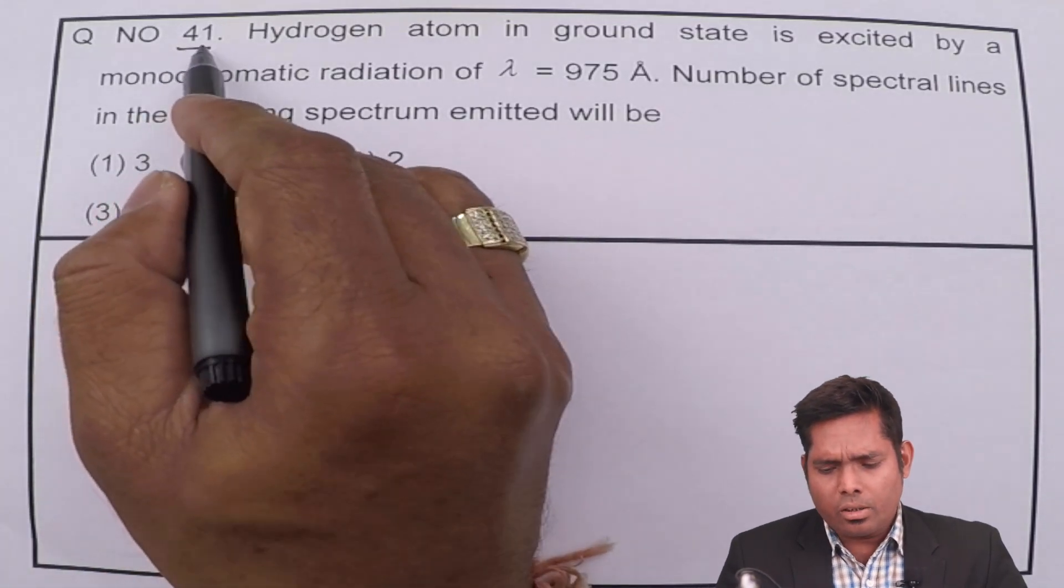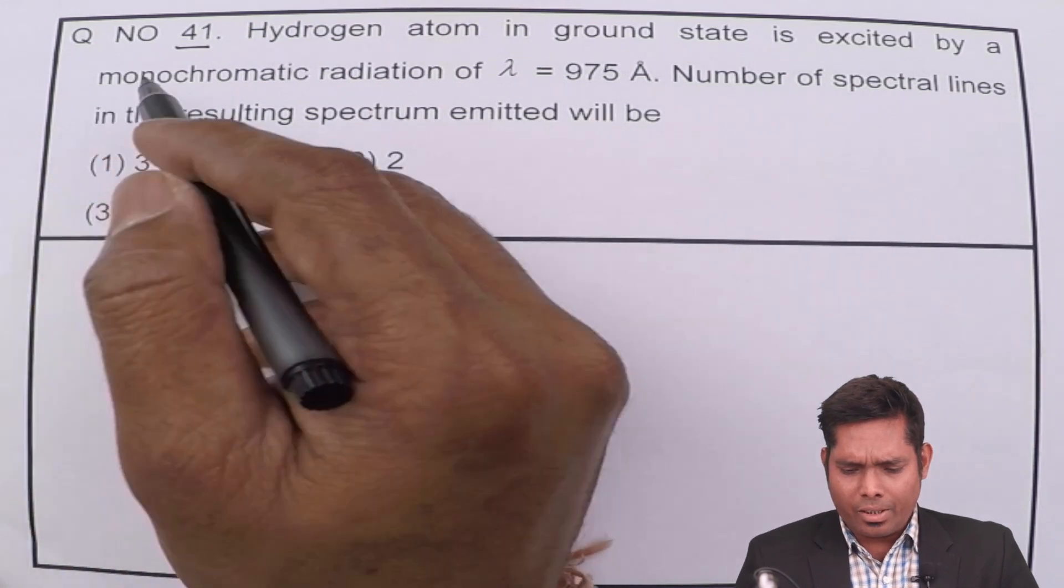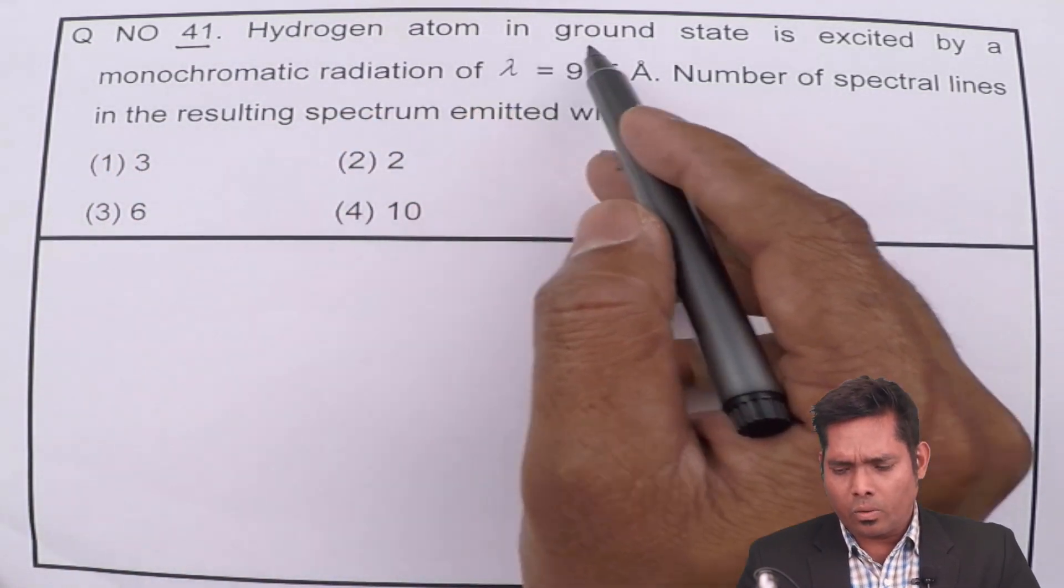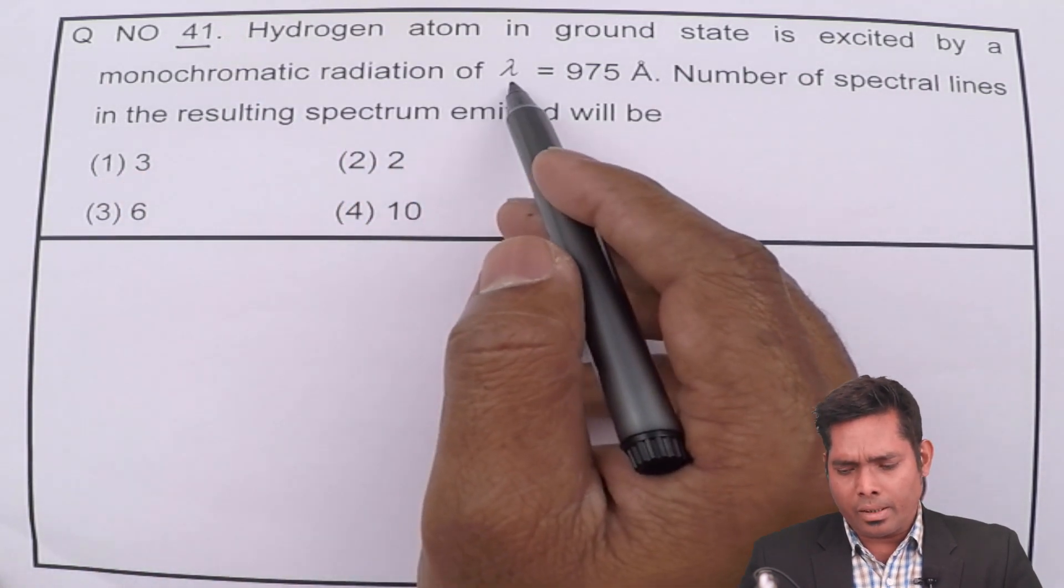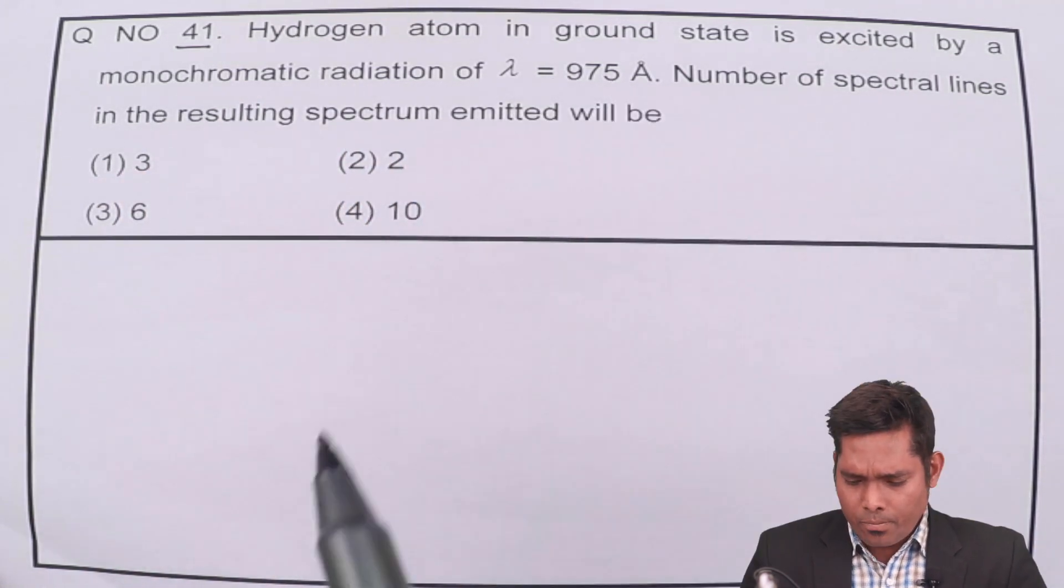Students, let us solve the next question, question number 41. It says hydrogen atom in ground state is excited by a monochromatic radiation of wavelength lambda, which is given by this.